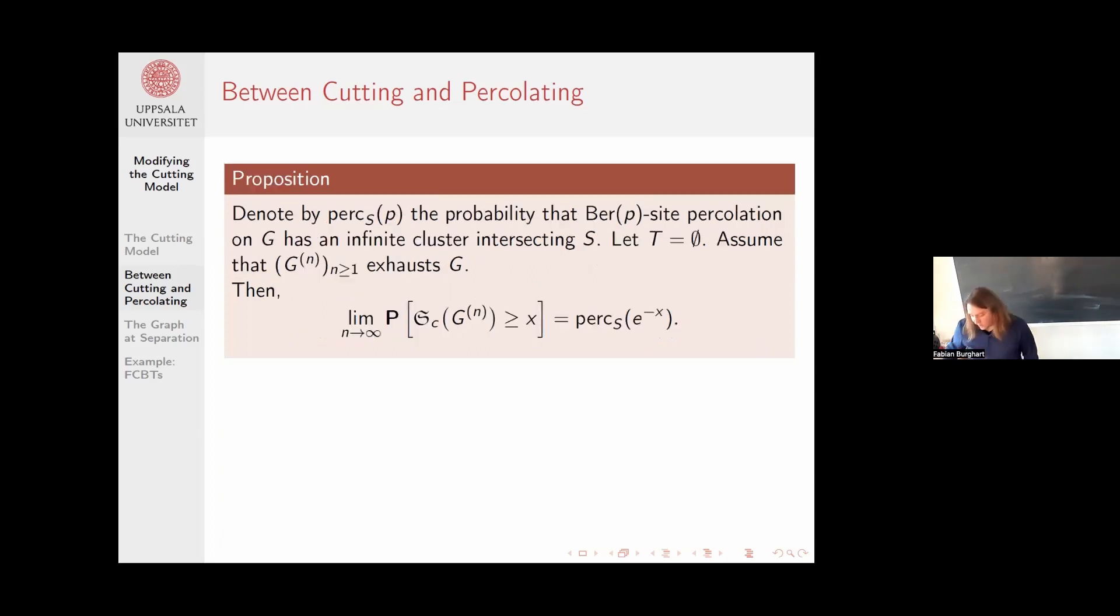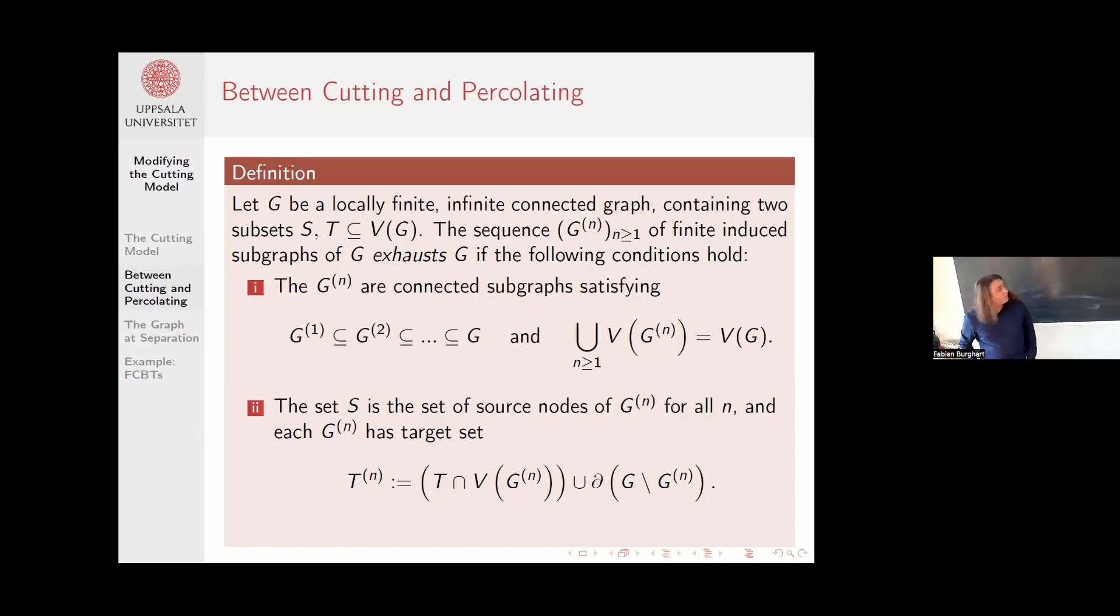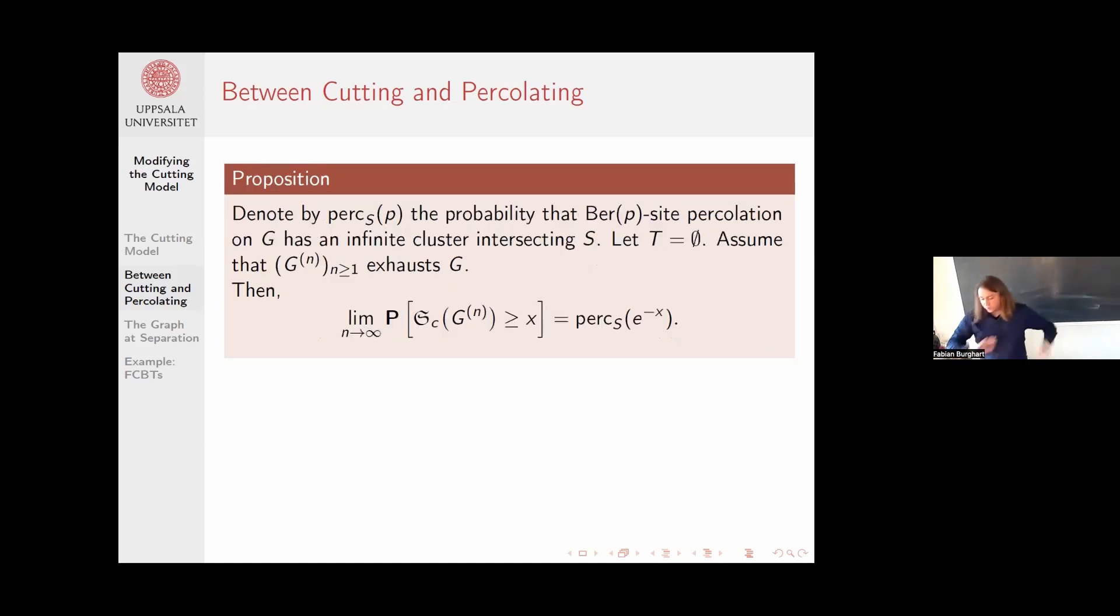In particular, if I work on such a graph and my chosen set T in the infinite graph is empty, then the contribution to the Tn will exclusively come from the second term. What happens is that you have this connection between site percolation on Gn and the continuous time cutting model. The limiting probability that separation has not yet occurred is equal to the probability that site percolation with probability e to the minus x contains an infinite cluster intersecting the set of sources.